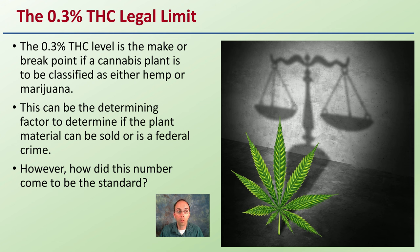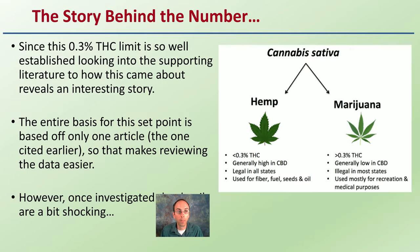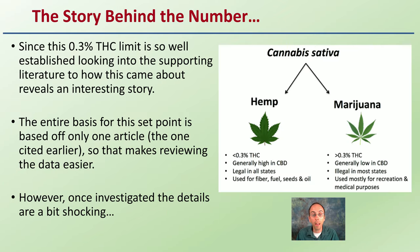So how did this number come to be the standard? What made them choose this particular THC level? Well, there's a story behind the number. Everything is cannabis, whether we're talking about hemp or marijuana. Since the 0.3% THC limit is so well established, looking into the supporting literature to how it came about reveals a very interesting story.